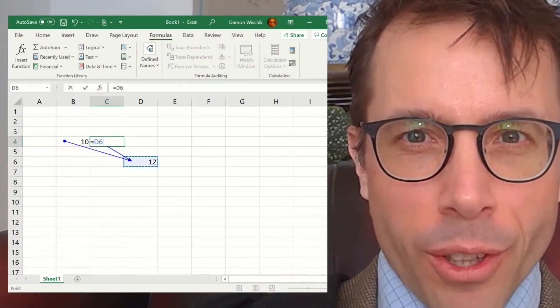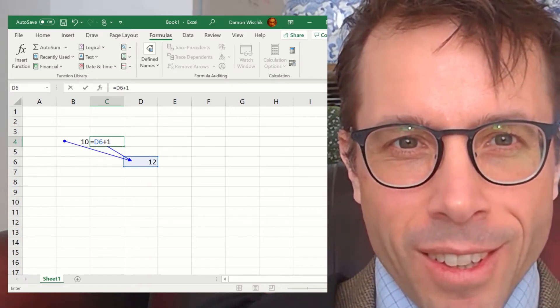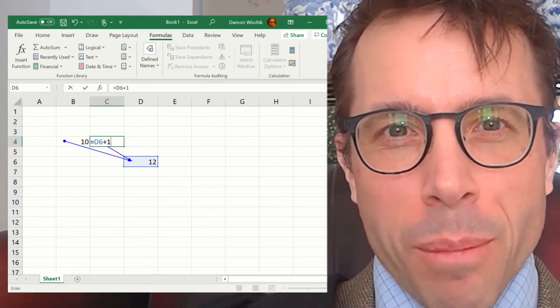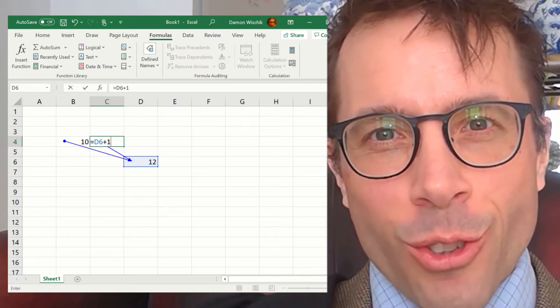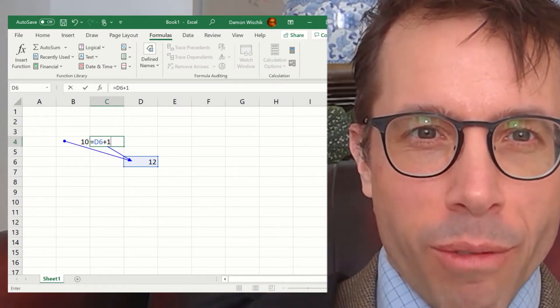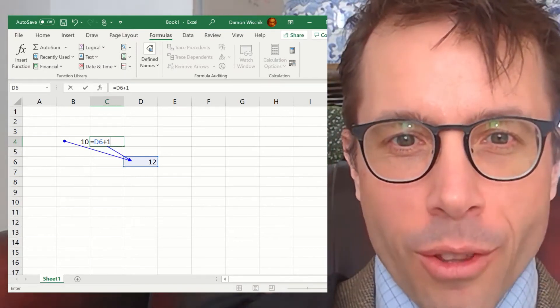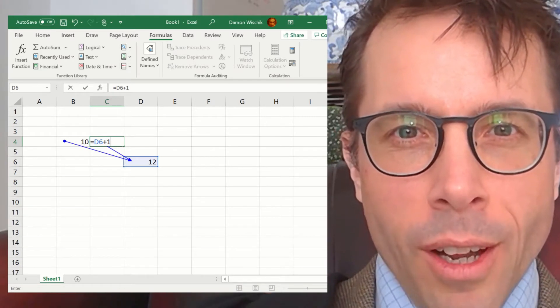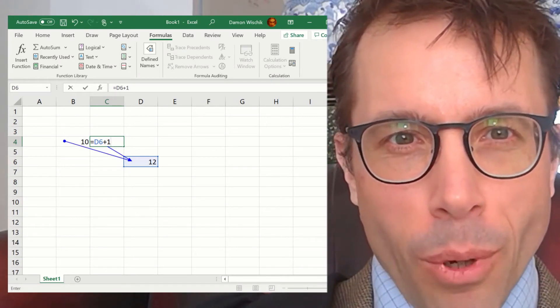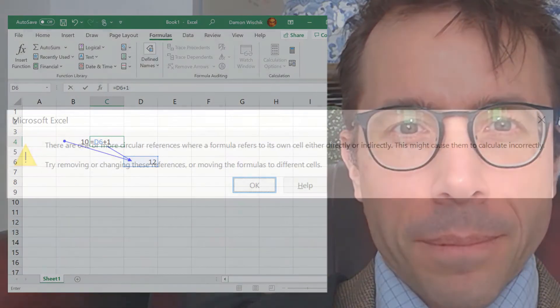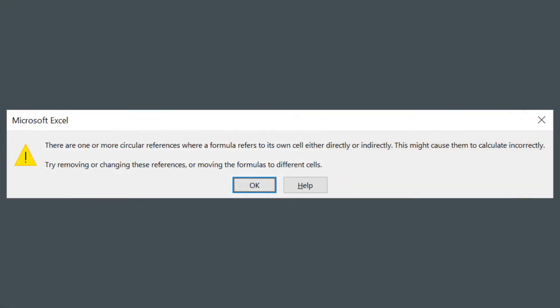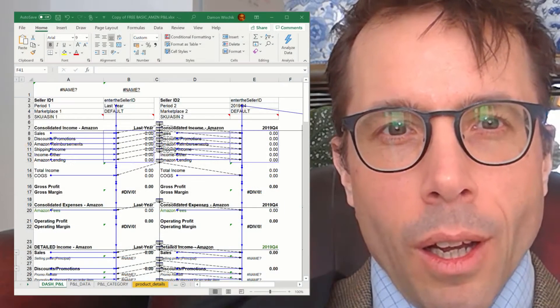Well, there are three things that could happen: one, Excel crashes; two, this circular reference creates a singularity and the earth gets sucked into a black hole; three, Excel figures out there's a problem and won't let you proceed. It's option three - the earth is safe from singularities, at least for today.